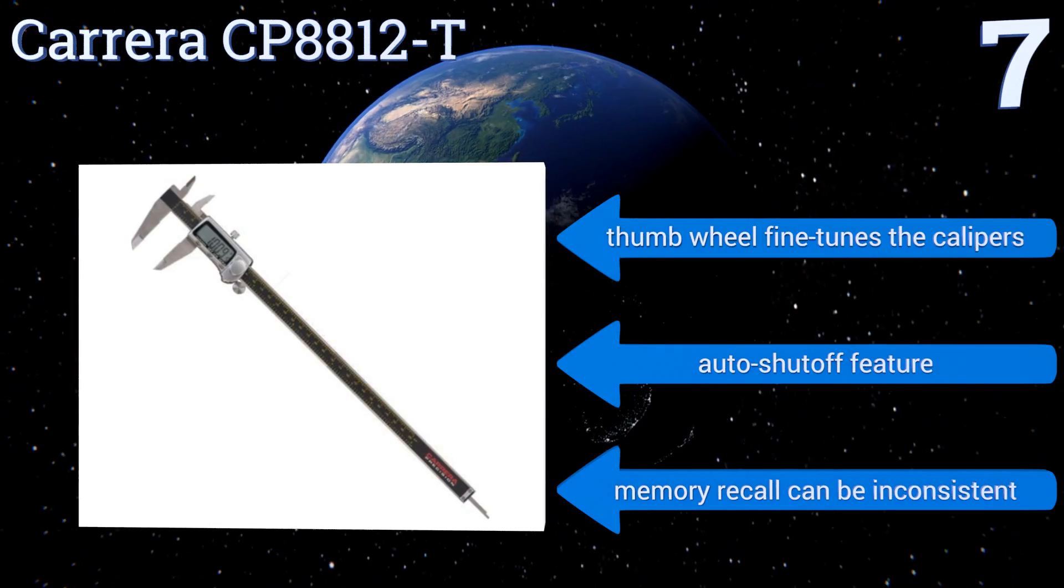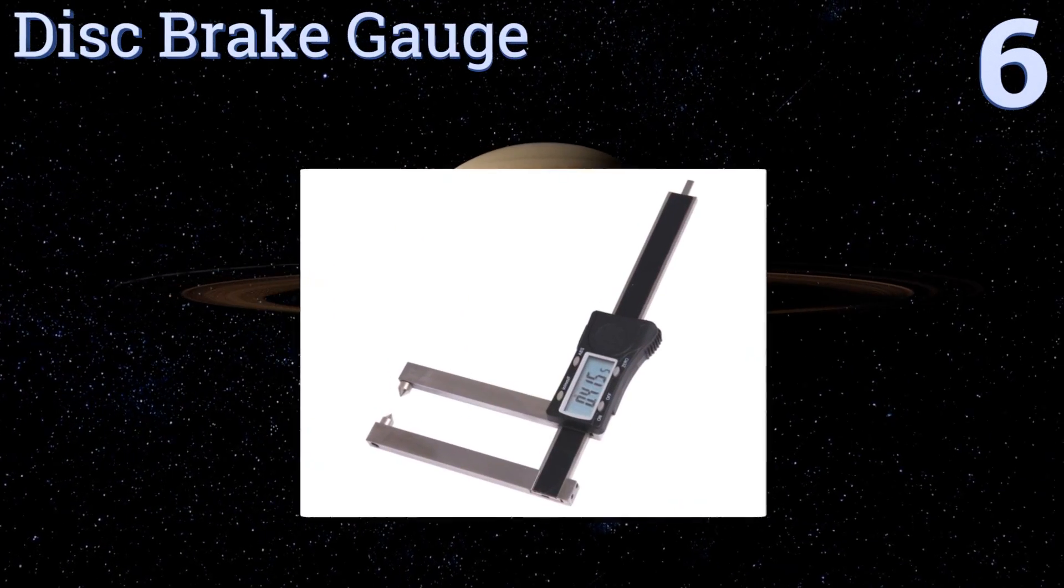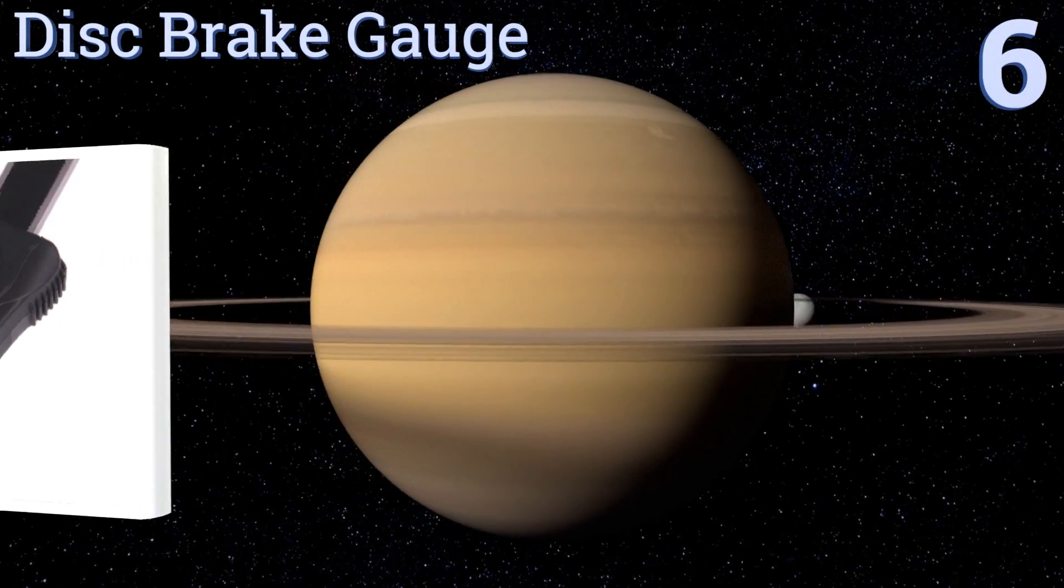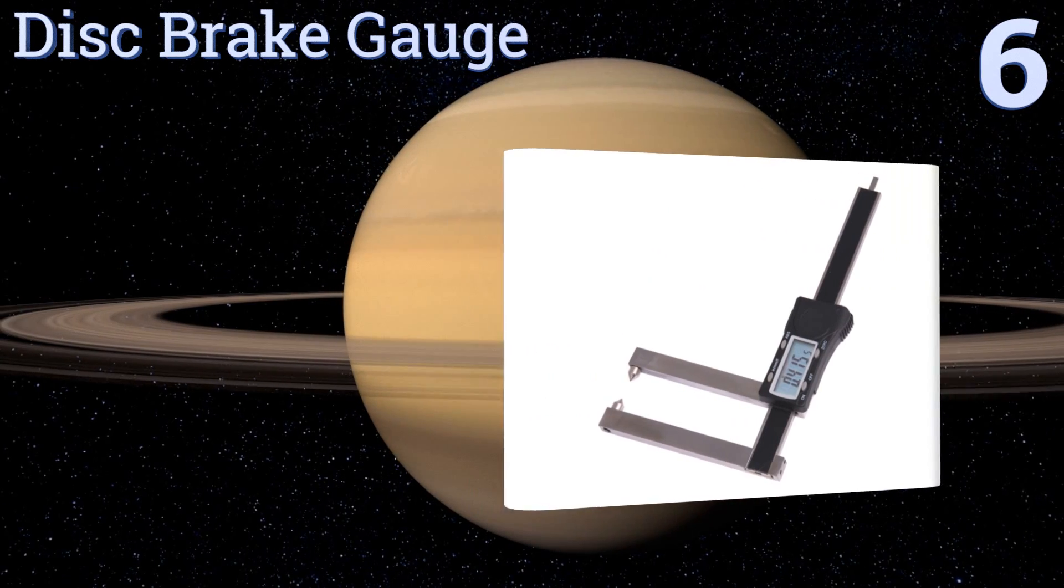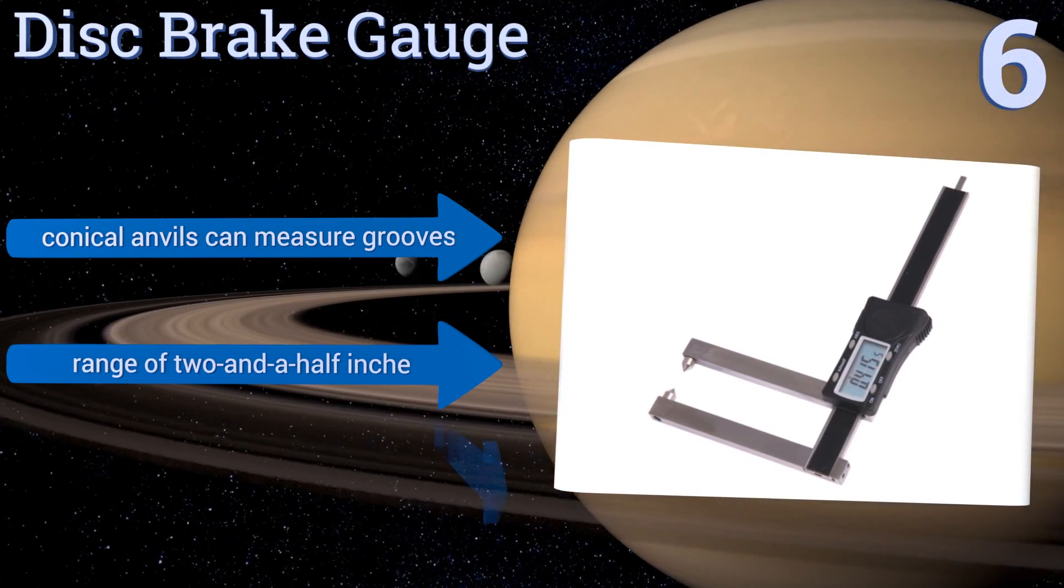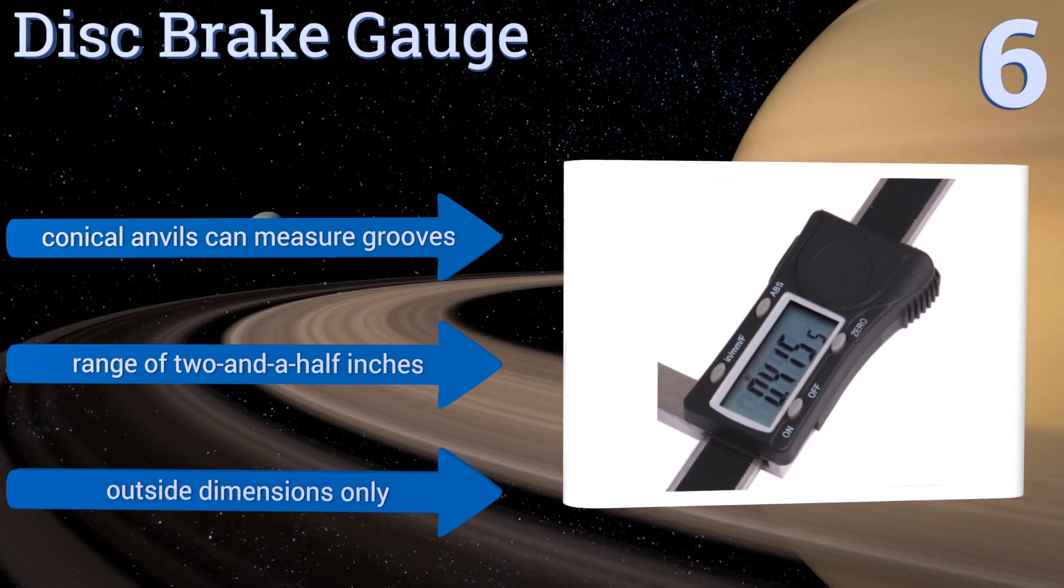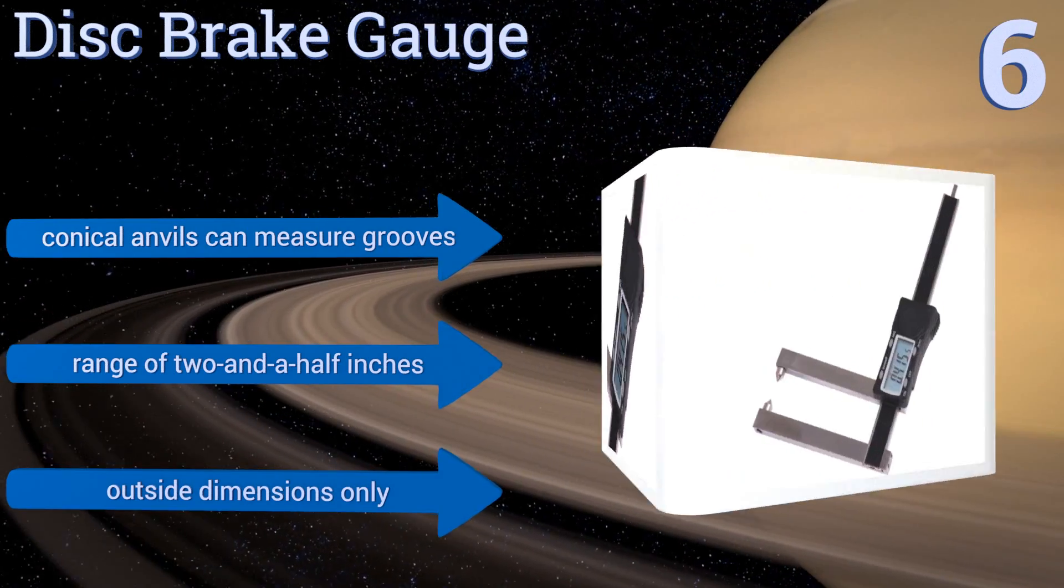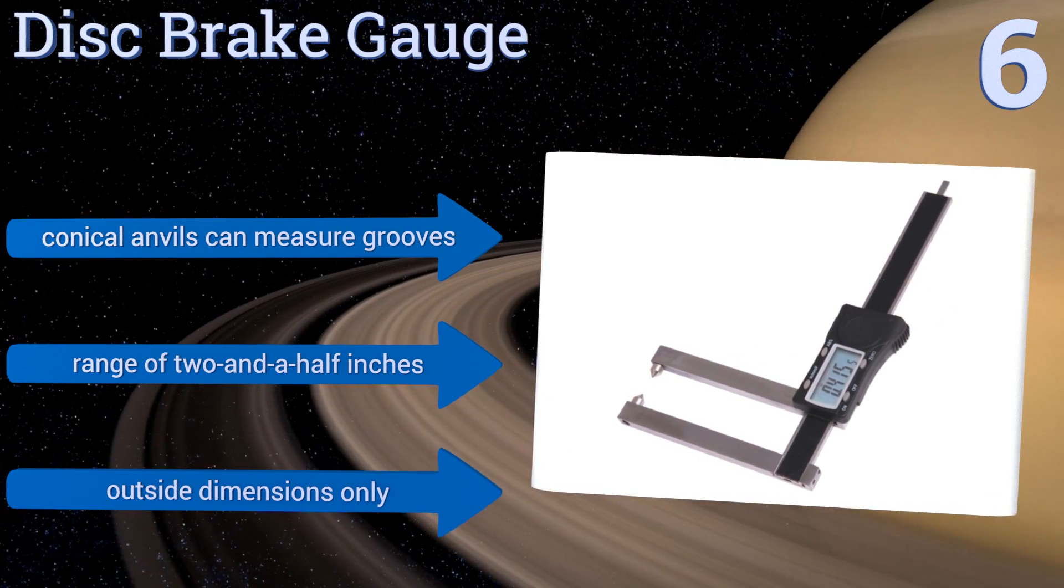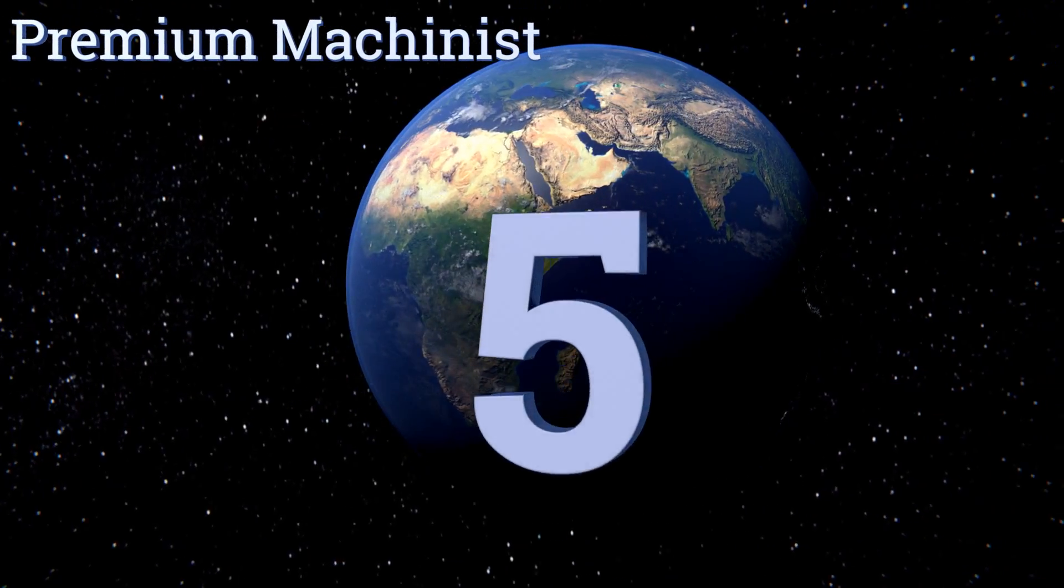Moving up our list to number six, providing good value for a specialized task, the Disc Brake Gauge by Anytime Tools was custom designed for auto mechanics. It shows imperial and metric readings on its high contrast LCD while its three and a half inch throat depth accommodates even large rotors. Its conical anvils can measure grooves and it offers a range of two and a half inches, however it can measure only outside dimensions.